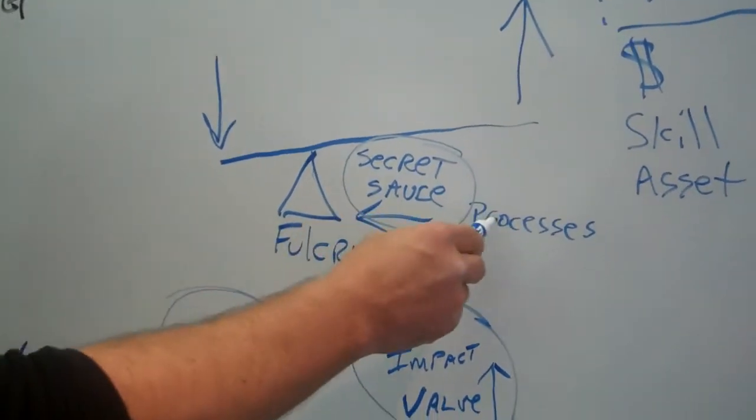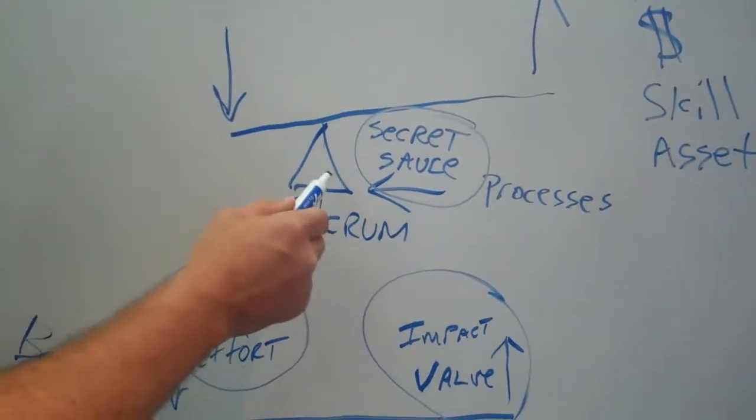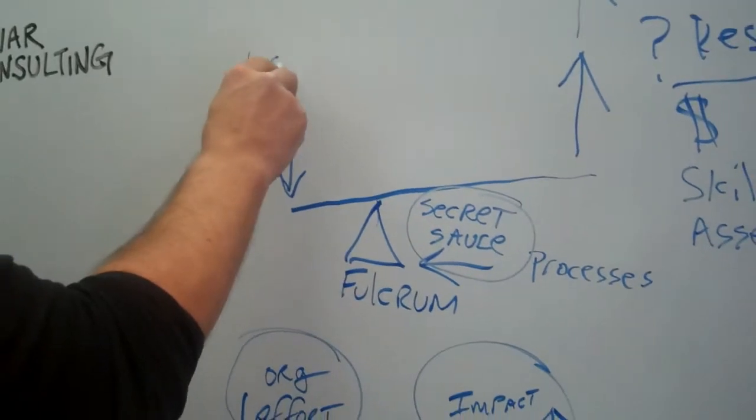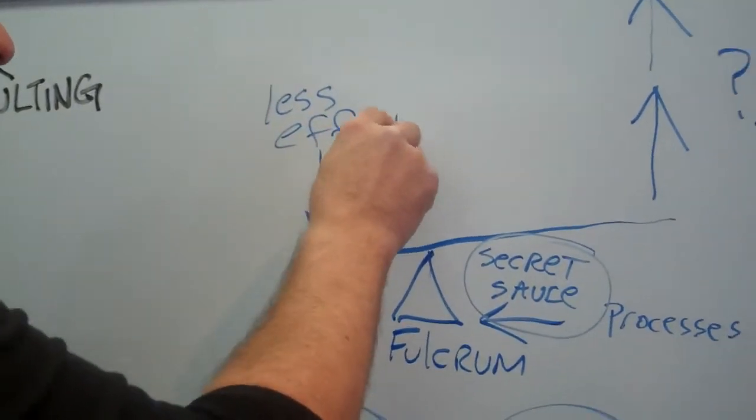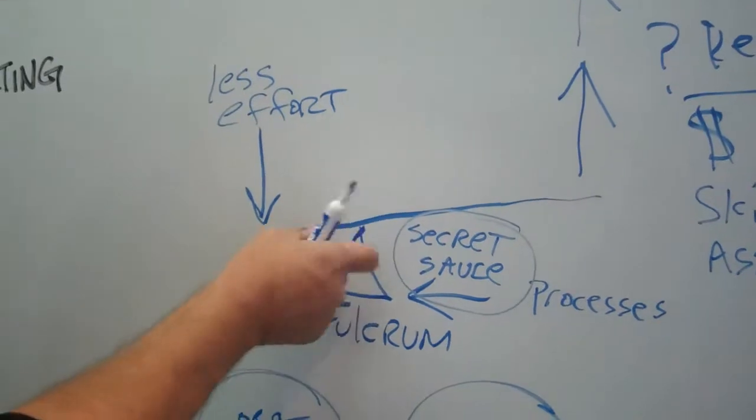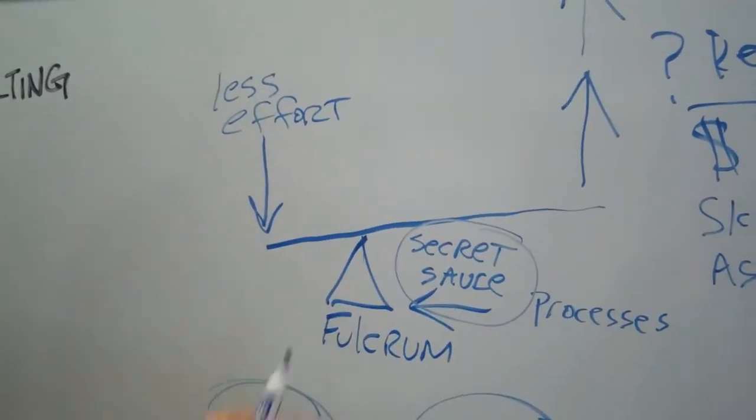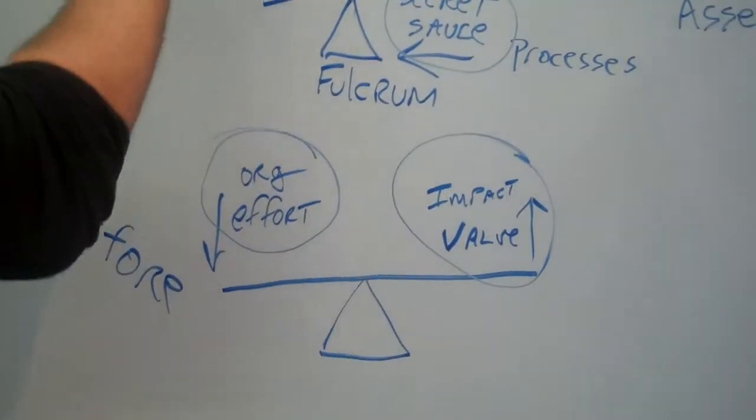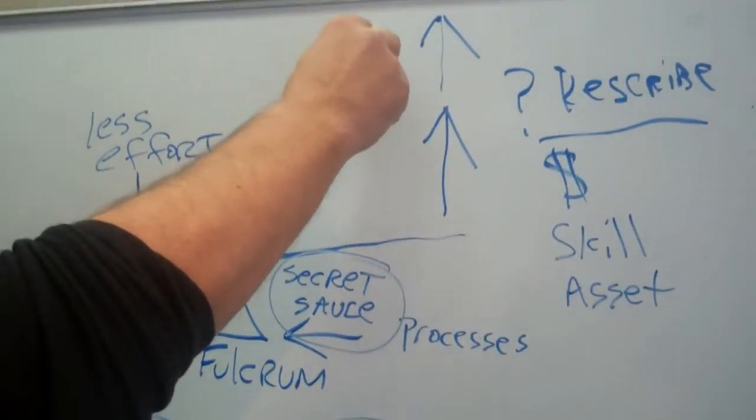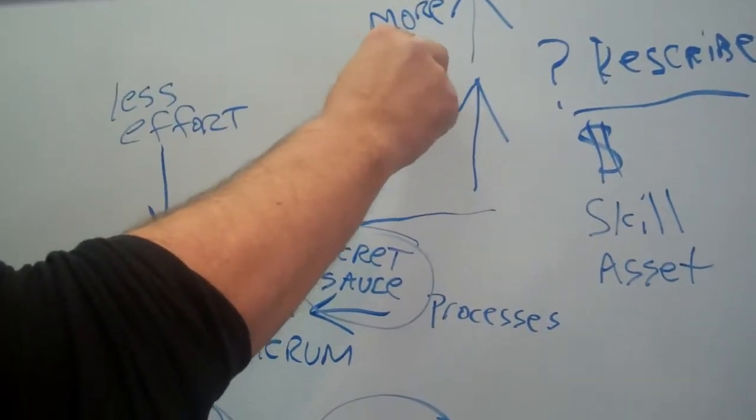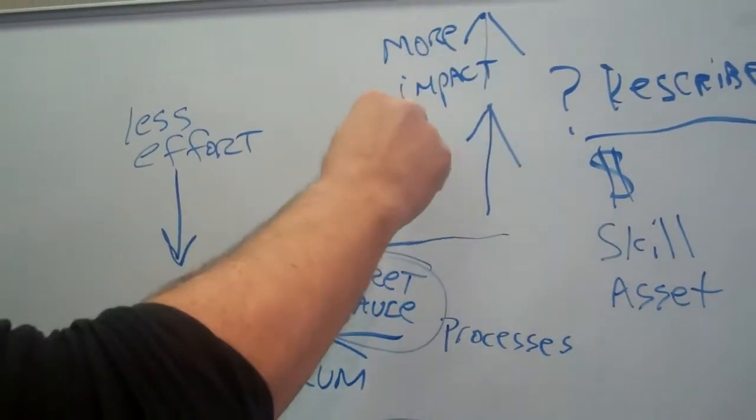So it's going to be less effort on this part because you need less to push down on this fulcrum that's been moved in this direction. So it reduces this effort, so less effort to get more impact value over here.